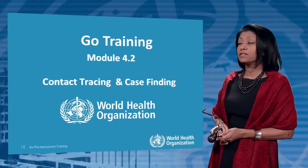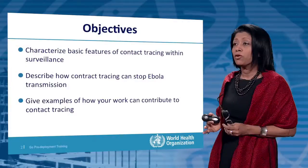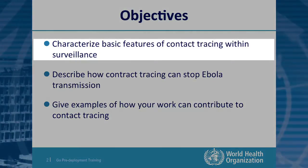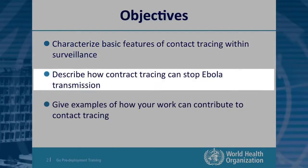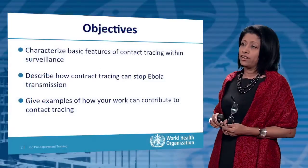Welcome back to the GO training. This is module 4.2, Contact Tracing and Case Finding. The objectives of this module are threefold. By the end of the session, you should be able to characterize basic features of contact tracing within the overall role of surveillance, describe how contact tracing can stop Ebola transmission, and give examples of how your work, regardless of why you are deployed, can contribute to contact tracing.